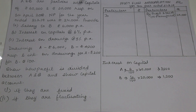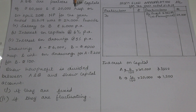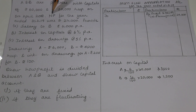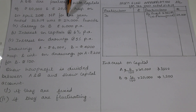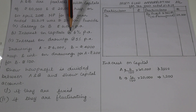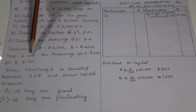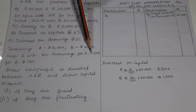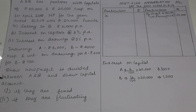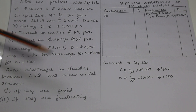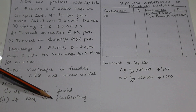A and B are partners with capitals of Rs. 60,000 and Rs. 20,000 respectively. On 1st April 2018, net profit for the year ended 31st March 2019 was Rs. 24,000. Provide salary of Rs. 6,000 per annum, interest on capitals at 6% per annum, interest on drawings at 5% per annum. Drawings of A and B are Rs. 6,000 and Rs. 4,000 respectively, and interest on drawings for A and B is Rs. 200 and Rs. 100 respectively. We have to show how profit is divided between A and B, prepare the Profit and Loss Appropriation Account for the year ended 31st March 2019, and also prepare capital accounts as per both Fixed Capital Account Method and Fluctuating Capital Account Method.